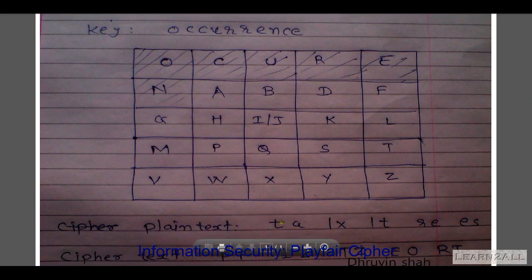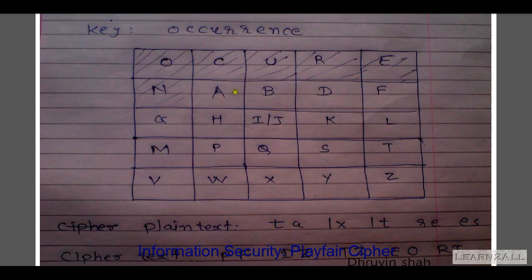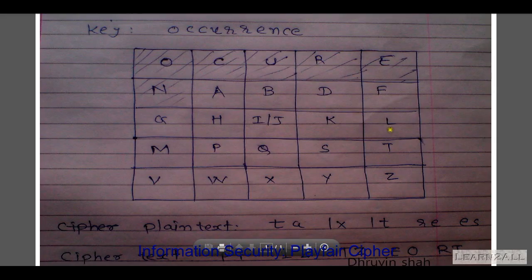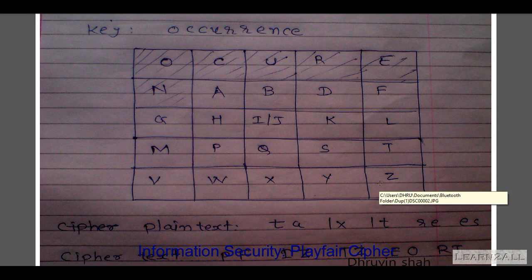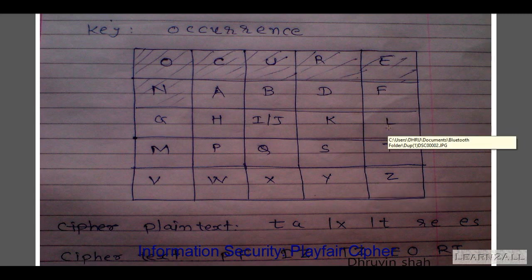The first pair of the plaintext is TA. Find T and A in the matrix. Here is T and here is A. In place of T we write P in the ciphertext, and in place of A we write F. Then the pair LX — L and X. In place of L we write I, and in place of X we write Z. Then the pair LT — L and T. Both letters are in the same column, so we move downward. In place of L we write T, and in place of T we write Z.